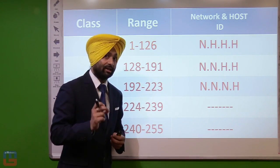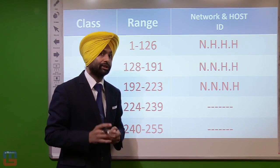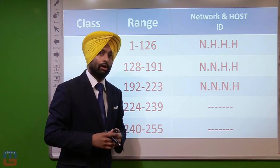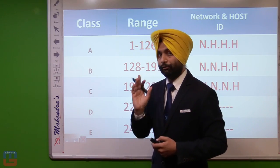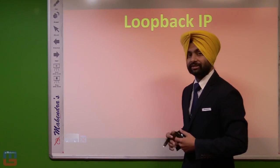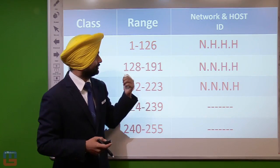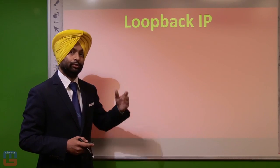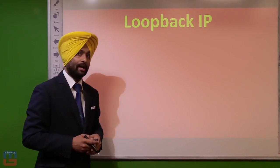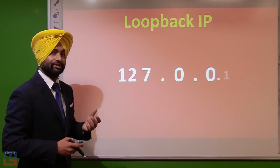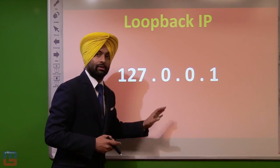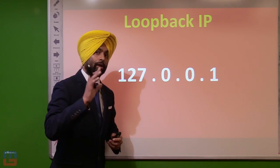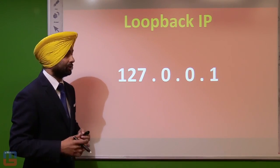Class E is important because it is reserved for experimental and future use, with a range of 240 to 255. You may notice that 127 is missing from the class ranges — 127 is used as the loopback IPv4 address. The default loopback IPv4 address is 127.0.0.1.